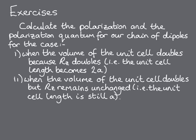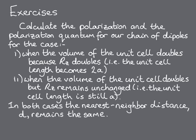And second, with the volume of the unit cell doubled by doubling the surface area perpendicular to Z, but keeping Rz the same. In both cases, you'll keep the nearest neighbour distance between the ions equal to D, and look at how your calculated polarisation lattice and your polarisation quantum change in both cases.